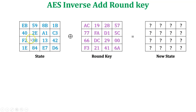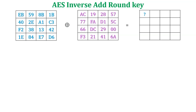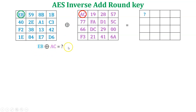Now perform the inverse add round key function with this state array and the add round key. To obtain the first element of the new state array, the first value of the state array, EB, is XORed with the first value of the add round key, which is AC. So it means EB XOR AC generates the first element of the new state array.